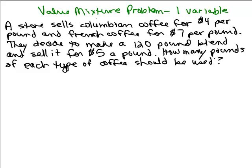A store sells Colombian coffee for $4 per pound and French coffee for $7 per pound. They decide to make a 120 pound blend and sell it for $5 a pound. How many pounds of each type of coffee should be used?